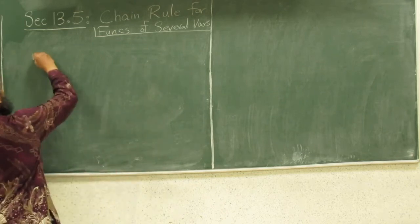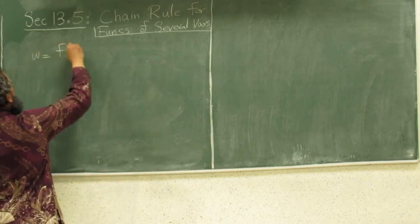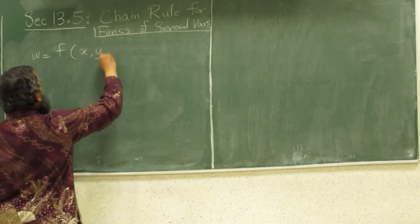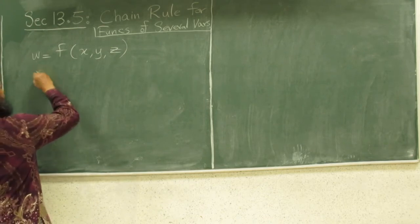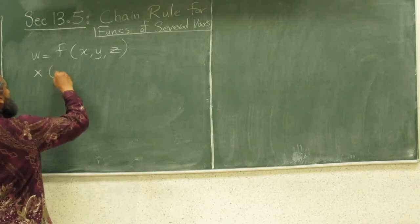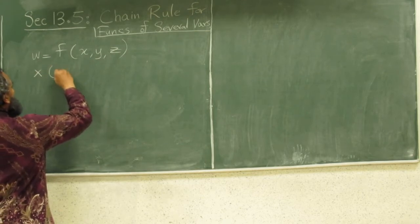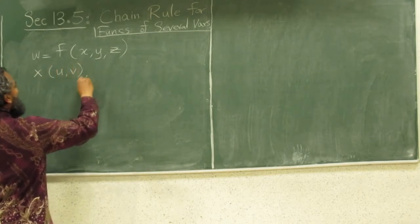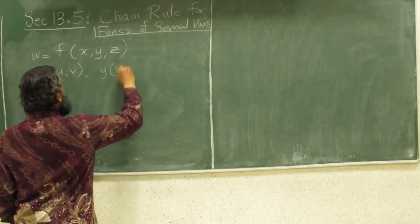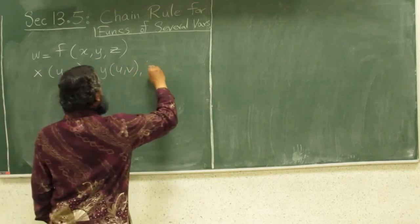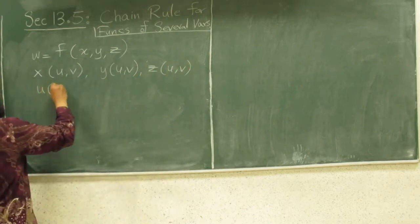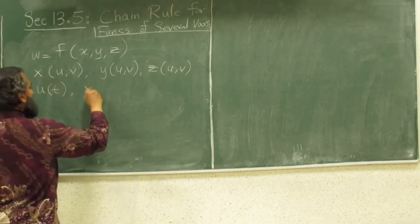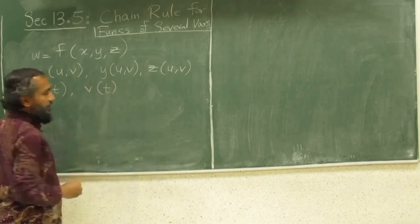Let's say w happens to be a function of x, y and z. It is a function of three variables and each of these x, y, z's are functions of u and v. y is a function of u and v and z is a function of u and v. And both u and v are functions of t.